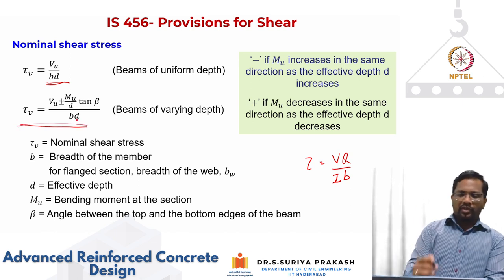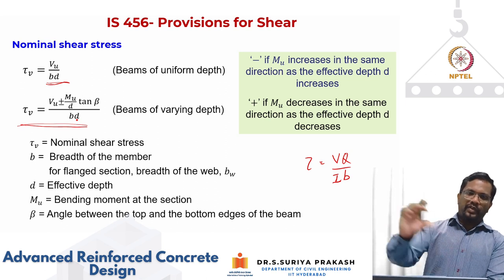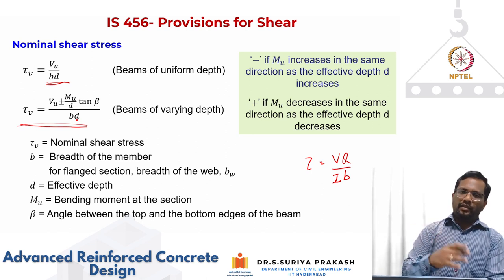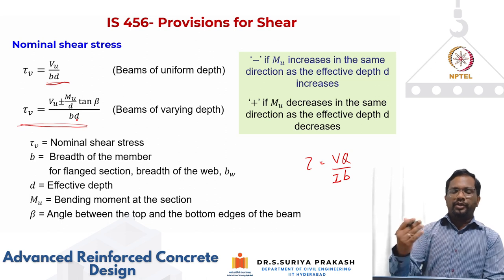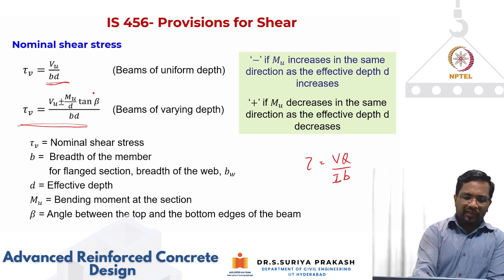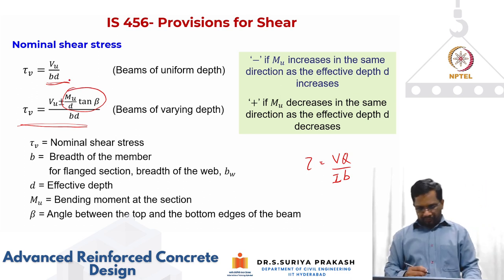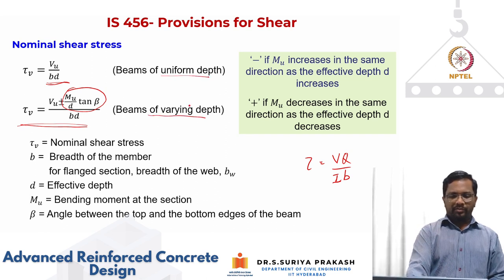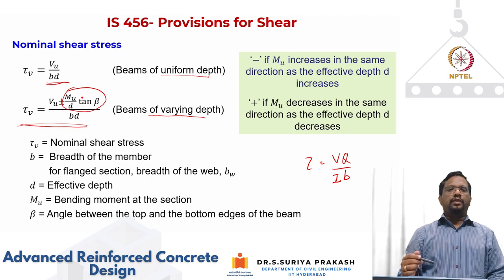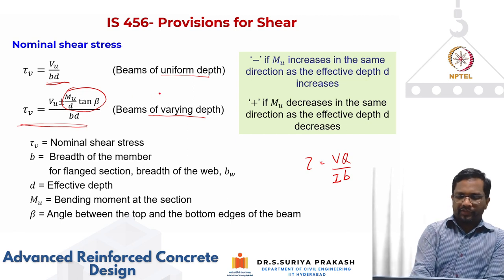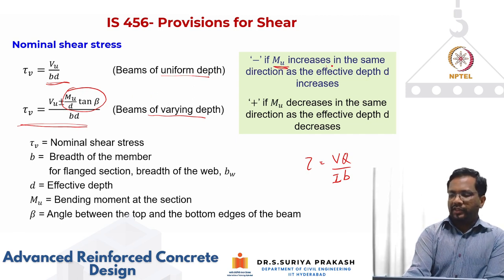The code also recognizes that for beams of varying depth — where you don't have a constant cross section — there is an additional shear component that can either amplify or reduce the shear demand. This is captured as V_u ± (M_u / d) × tan(β) divided by b, depending on how the beam depth is varying.